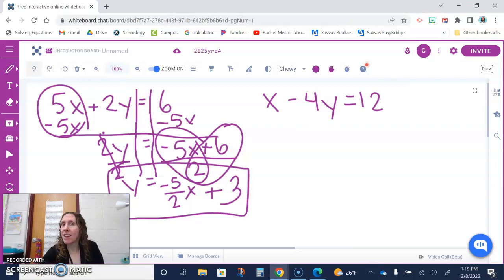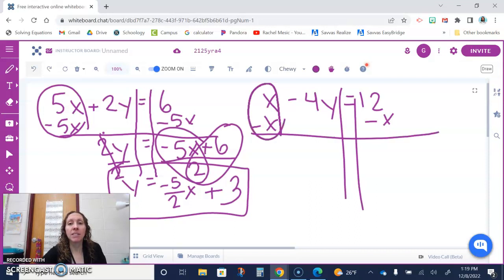We have to get rid of that x. This minus 4y, that negative belongs to the 4, not to the x. The x is positive. So to get rid of the x we have to subtract it. I forgot my railroad tracks there. So x minus x is 0 or nothing. Bring down negative 4y. And then 12 minus x. I can't combine them because they are not like terms. So I'm going to write them side by side. I'm going to put the x term first.